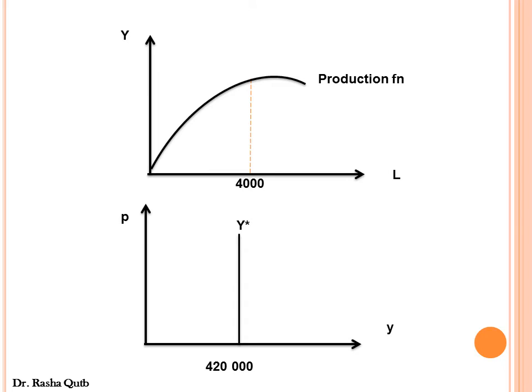After determining the equilibrium real wage rates, these equilibrium real wages determine the optimal size of labor desired to be employed by firms. This optimal size of labor then determines the full employment level of output. That is why the aggregate supply function in the classical model is vertical — because there are no other resources, and thereby we produce the full employment level of output.